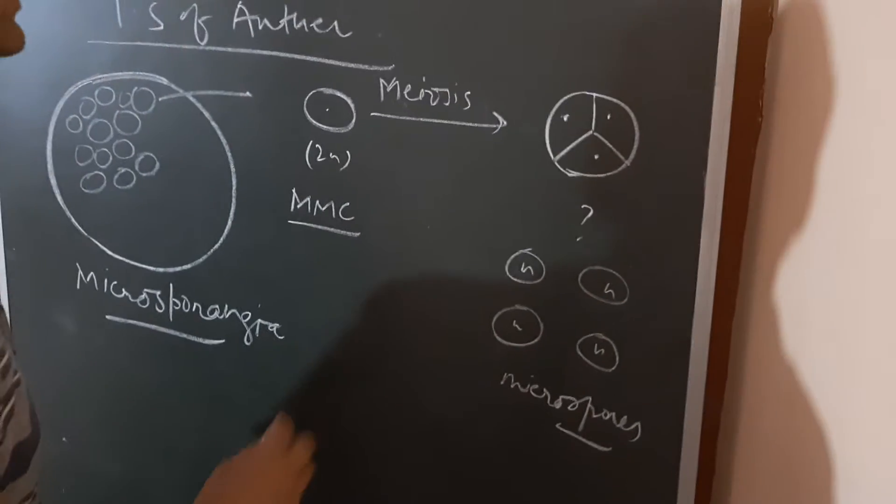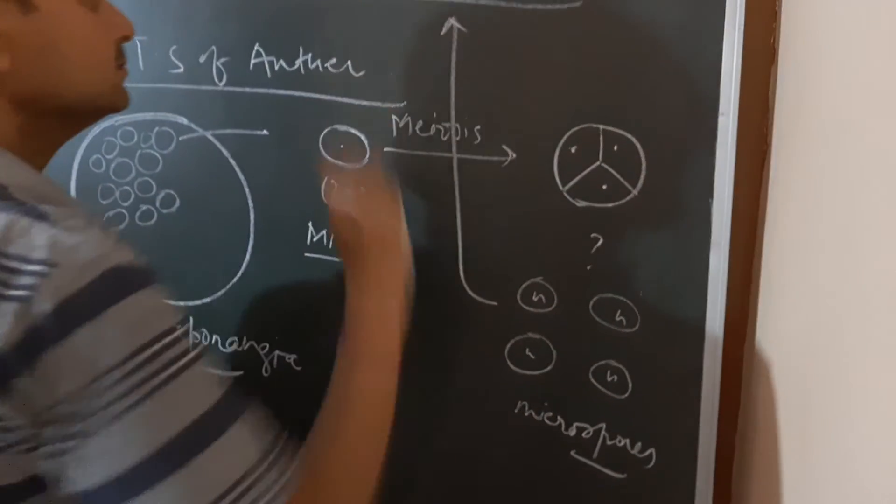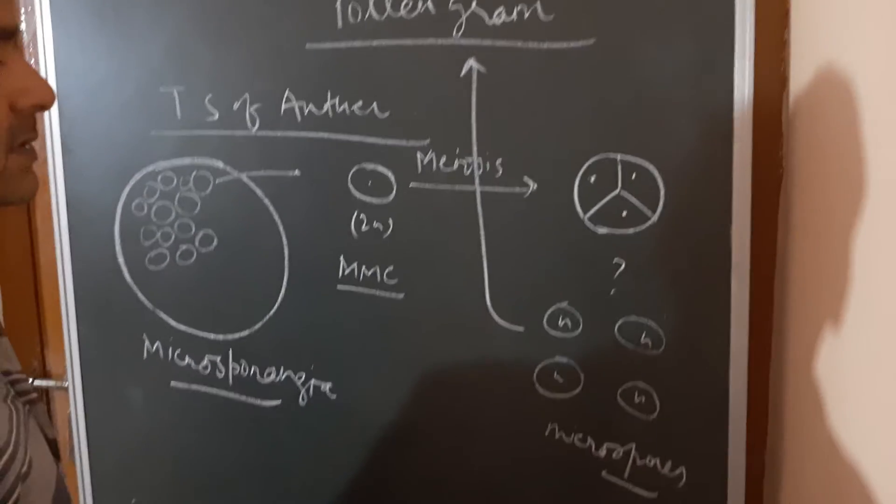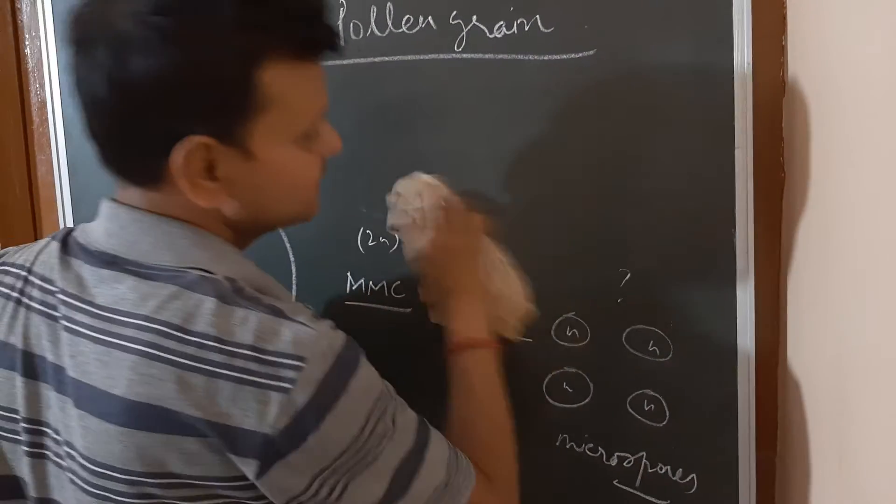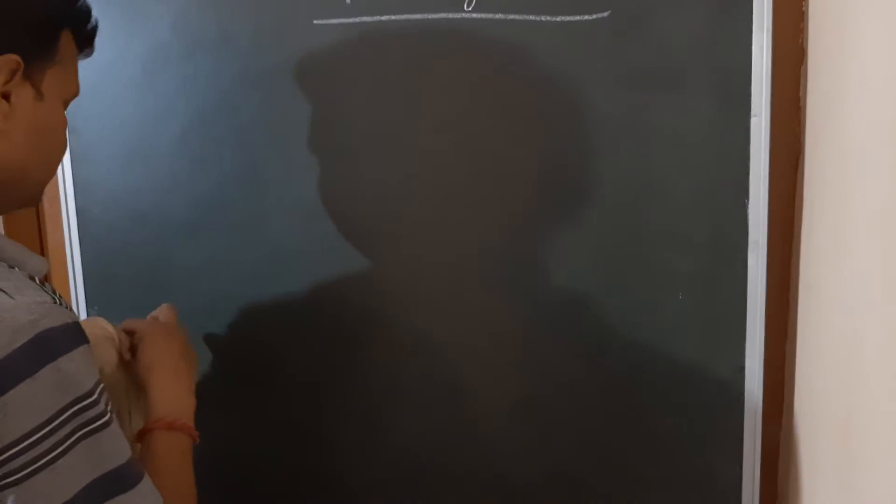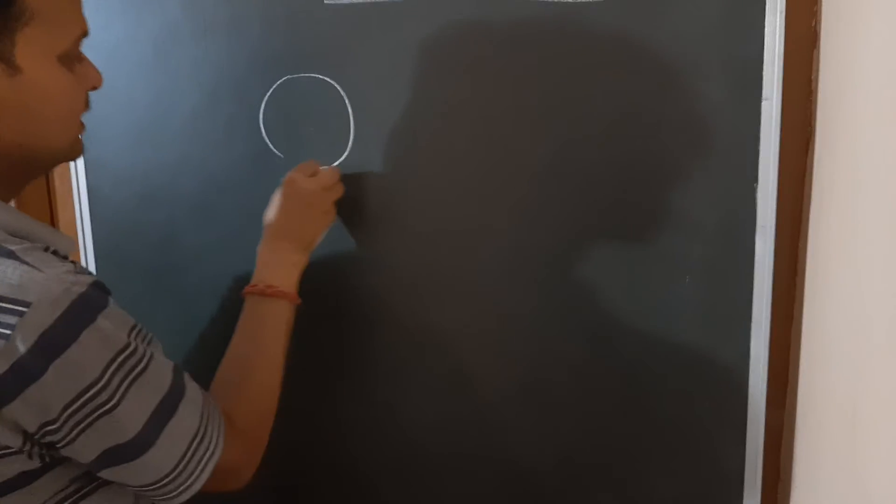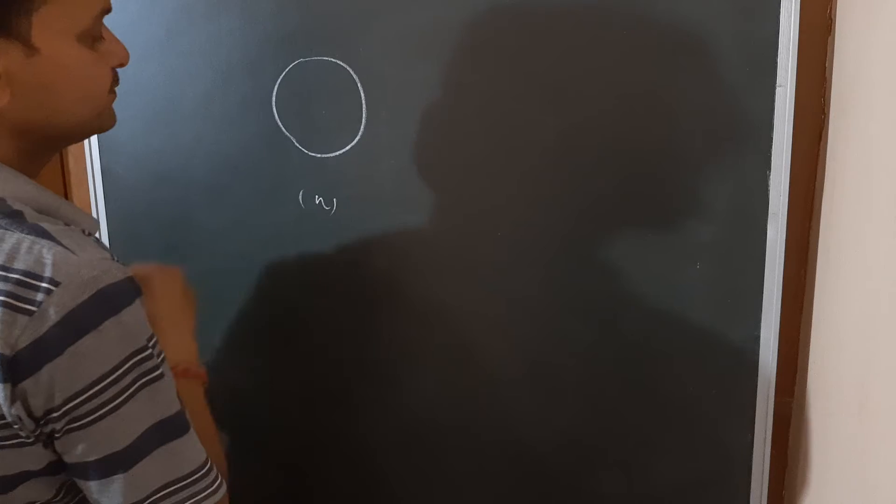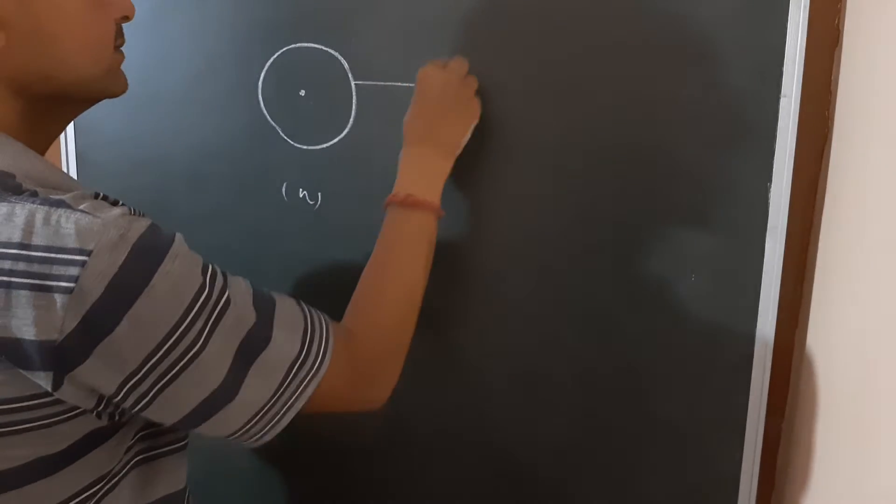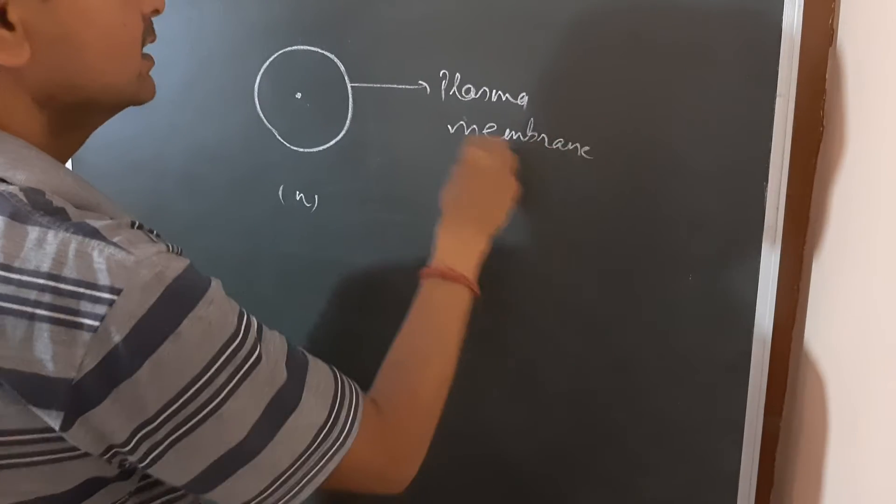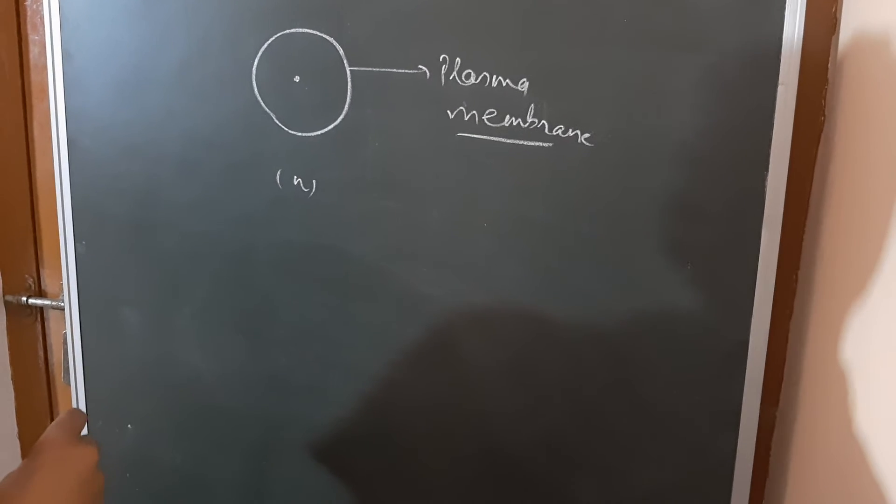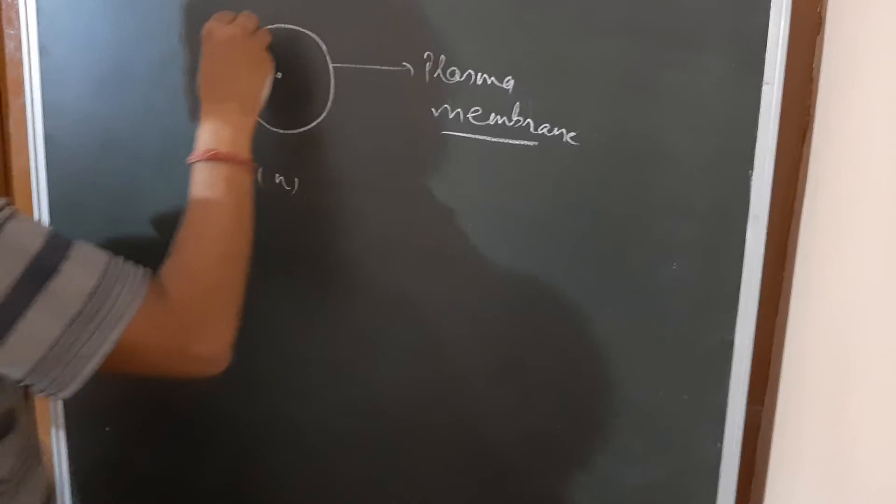These microspores are now going to get developed into this pollen grain, which is the gametophyte. Why it is called gametophyte? Because it contains the male gamete. Now we start with a functional microspore, a haploid cell. This microspore will have a haploid content of chromosomes and it will be surrounded by a layer which is called as the plasma membrane.